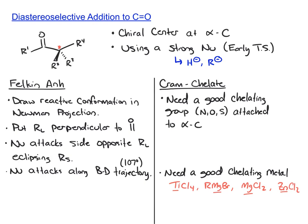We're going to work on a couple different models for diastereoselective addition to carbonyl compounds. Here's a generic structure we're going to be working with. We'll have an aldehyde or a ketone, and then at the alpha position we're going to have a chiral center. That's what gives us the diastereoselectivity in the product when we add a nucleophile. This also happens if you have chiral centers further down in the chain, but it's harder to predict. So we're just dealing with cases where the chiral center is at the alpha carbon.